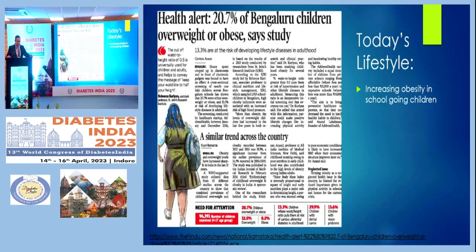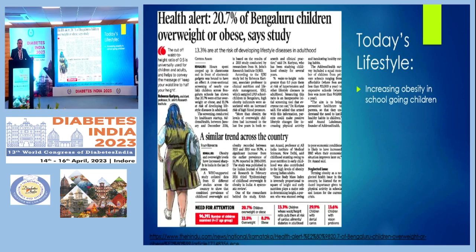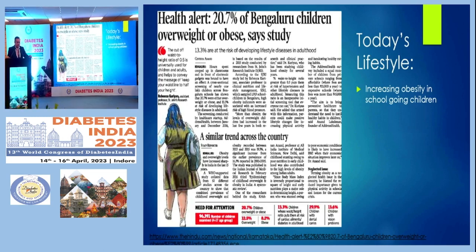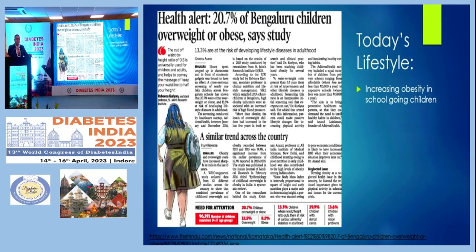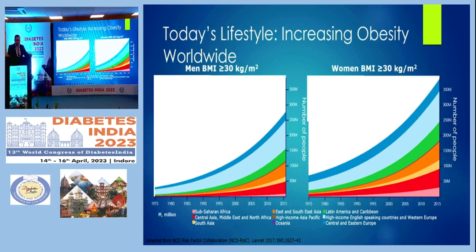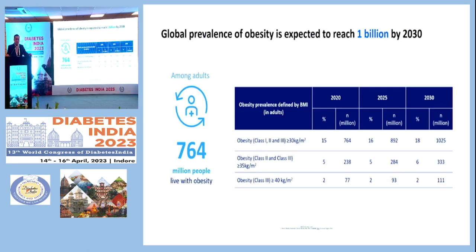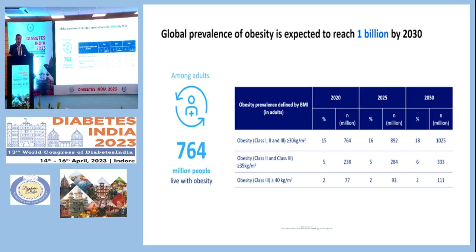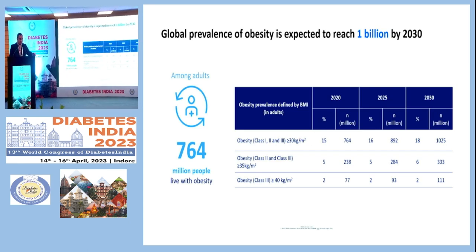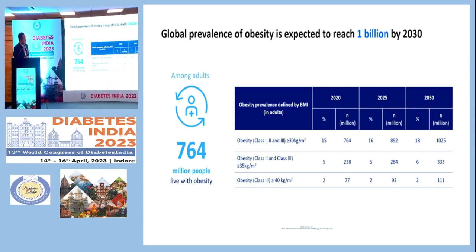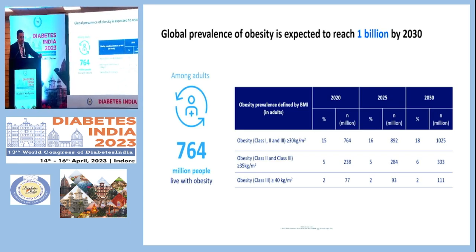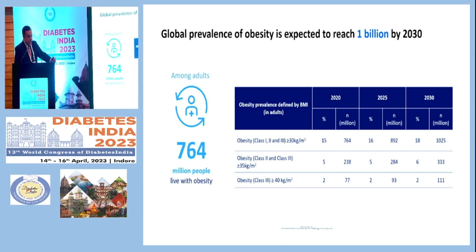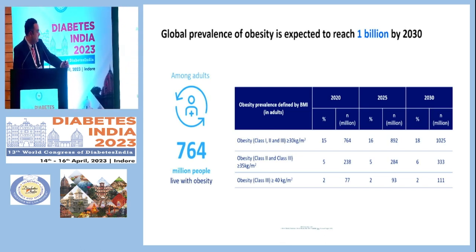In today's lifestyle, there is increasing obesity starting from school-going children. The Indian data is alarmingly high. Obesity prevalence is increasing worldwide in both men and women. The global prevalence of obesity is going to reach 1 billion — not million, but billion — by 2030. Among adults, 764 million people will have obesity.